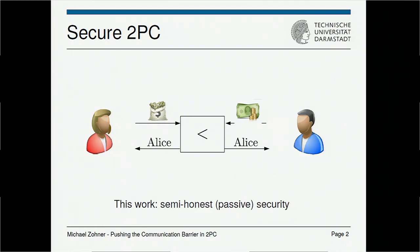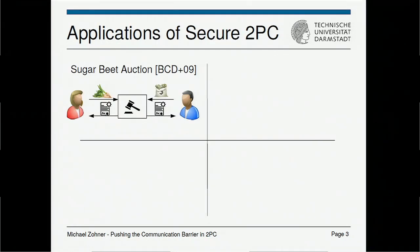In this work, I'm going to focus explicitly on the semi-honest case. As was told in the last two talks, in this case we have an adversary that does not deviate from the protocol but tries to learn as much information as possible. Moving away from this toy example, secure computation has actually been used for quite some real applications.